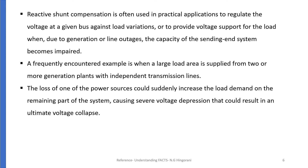The loss of one of the power sources could suddenly increase the load demand on the remaining part of the system, causing severe voltage depression that could result in an ultimate voltage collapse. So in order to avoid such situations for a radial long transmission line, shunt compensation is provided at the load end. This is one of the applications of shunt compensation.